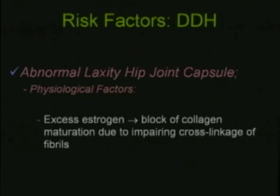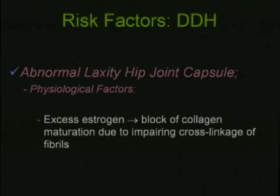One of the most important factors in DDH is excess estrogen, which blocks collagen maturation due to impairment of cross-linkage of fibrils in the joint capsule and cartilage. In babies, until the estrogen effect decreases after birth — usually within the first four to six weeks of life — there is significant physiological laxity of the hip.